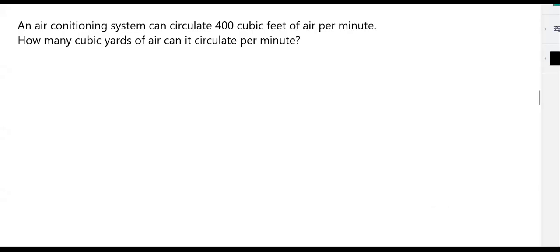Okay, so we are given the question. An air conditioning system can circulate 400 cubic feet of air per minute. How many cubic yards of air can it circulate per minute? So essentially they're asking us to convert from cubic feet to cubic yards.